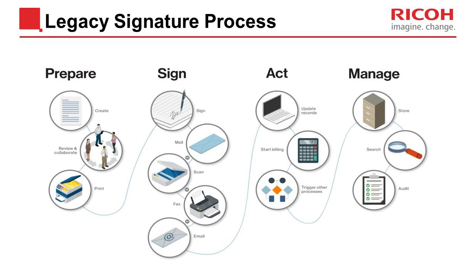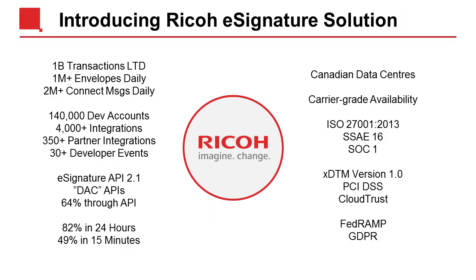Electronic signatures can streamline this process end to end. The RICO electronic signature solution has supported over a billion transactions, over a million envelopes daily, and over two million connect messages. There are over 140,000 development accounts and 4,000 integrations. It supports various APIs, demonstrates significant increases in turnaround time, has Canadian data centers and carrier-grade availability, and supports standards including ISO 27001, SAE 16, SOC 1, FedRAMP, and GDPR.